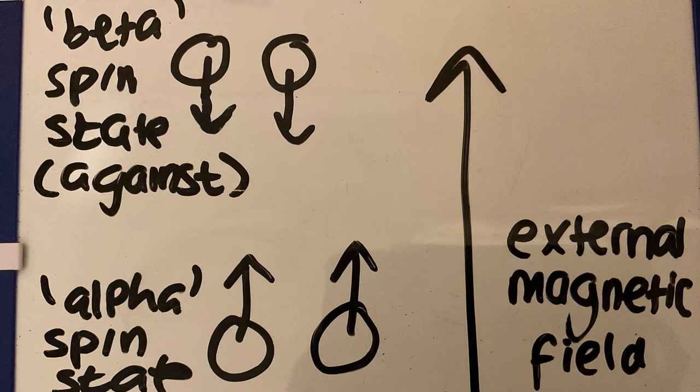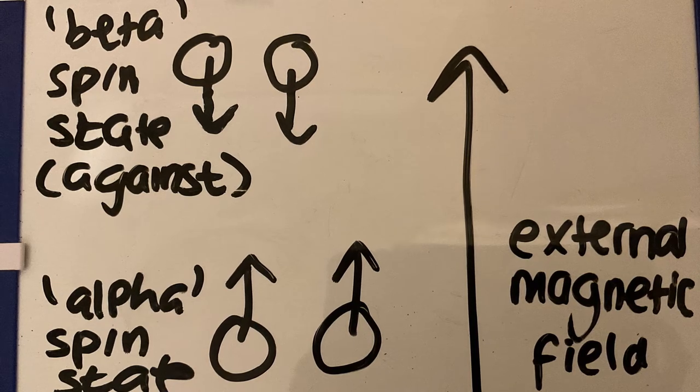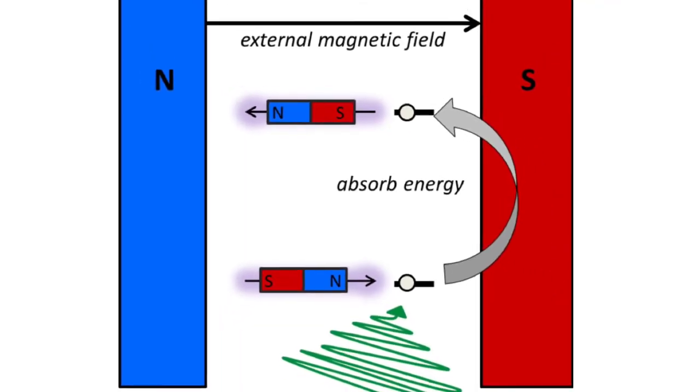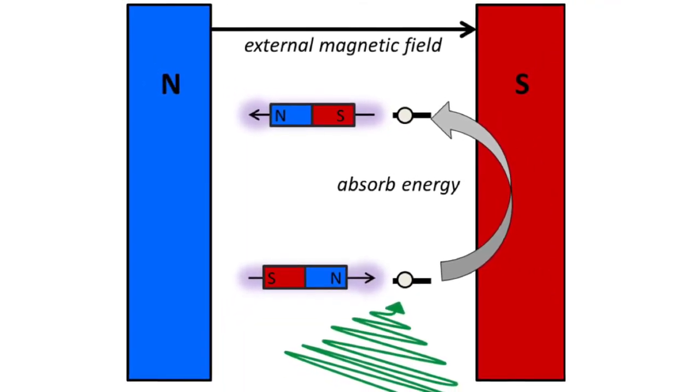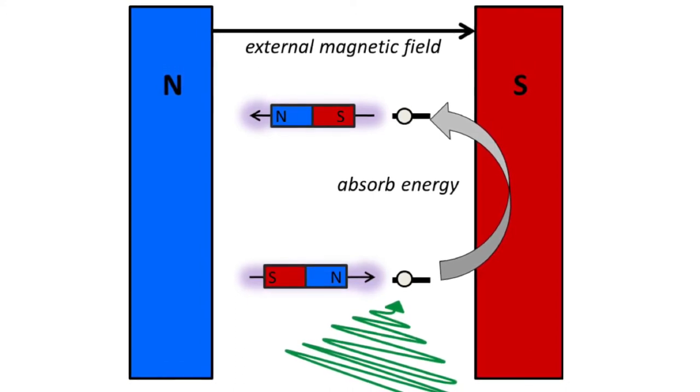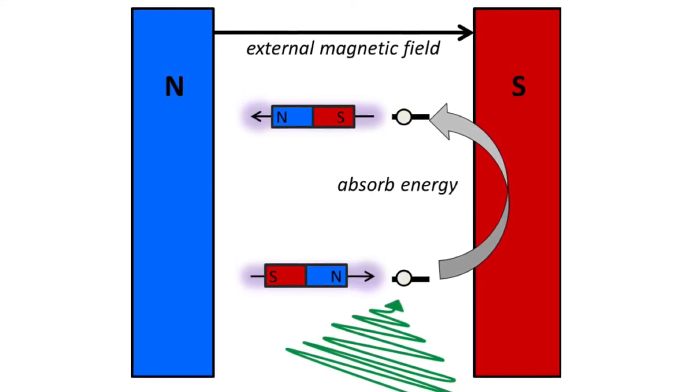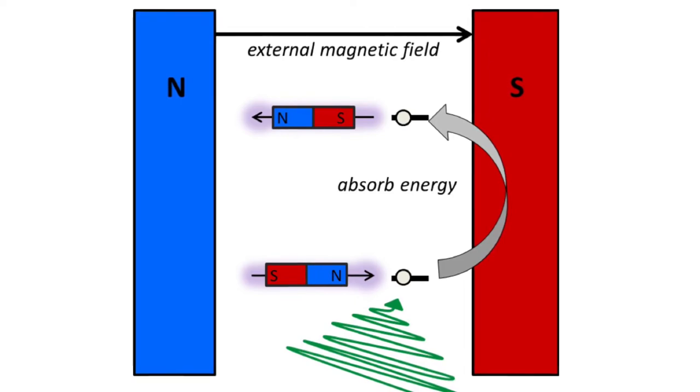If the nuclei falls back from the beta state to the alpha state, it can emit radio frequency energy. Resonance occurs when a perfect frequency is reached and the nuclei absorb the energy of the radio waves.